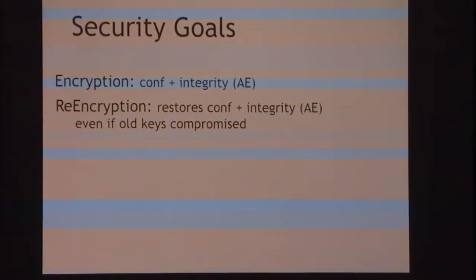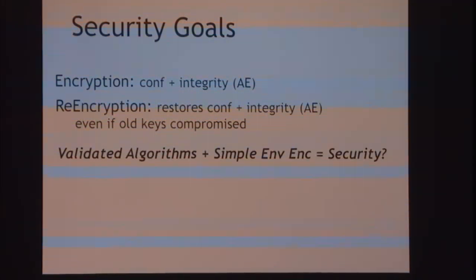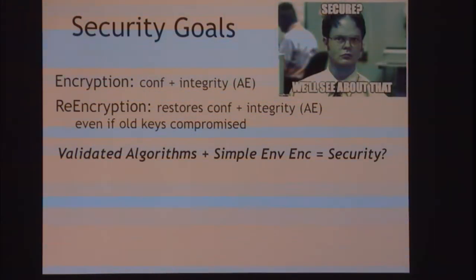What security goals do we want from re-encryption? Obviously, an updatable scheme shouldn't be any less secure than regular encryption — we want confidentiality and integrity. But re-encryption is interesting: intuitively, the reason I built an updatable scheme is I might have lost some old keys, so when I do a re-encryption, I expect recovering security. I should get back the same confidentiality and integrity for my updated file as if I had done a fresh encryption. Now, we're using validated authenticated encryption algorithms and putting them together with this simple envelope scheme. The question is: does this give us any security?